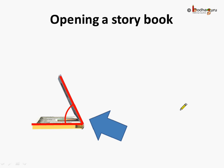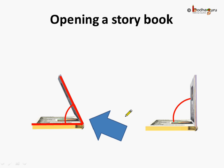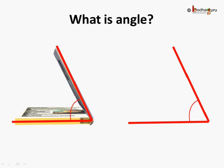So when we are opening the book, the turn between these two straight lines meeting at a point increases. Here they are meeting at this point and the turn is this much. And if we further open the book, the turn has increased. Compared to before, the turn has increased as we open the book further. So when two lines meet each other at a point, they form an angle. The angle is the amount of turn between the two straight lines which meet at a point. These are the two lines, and this is the amount of turn or the angle formed between these two straight lines.